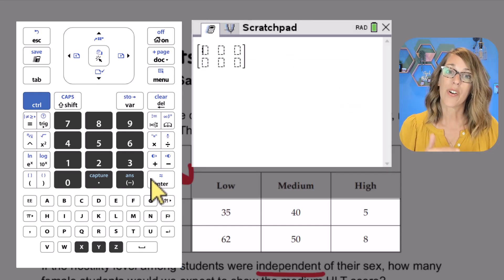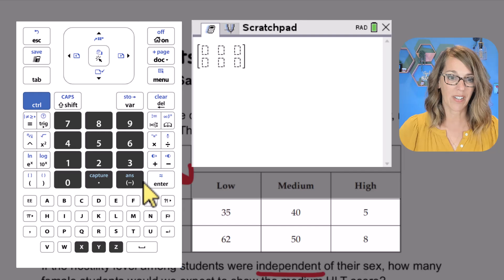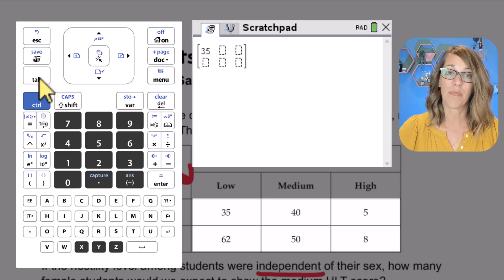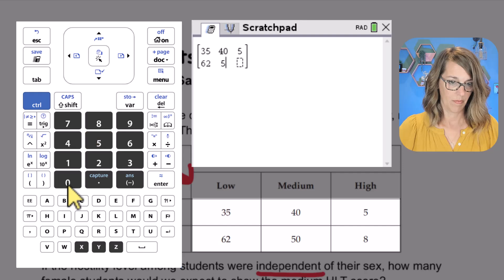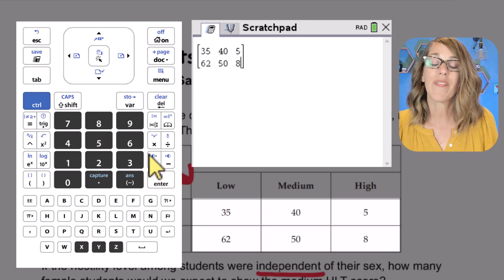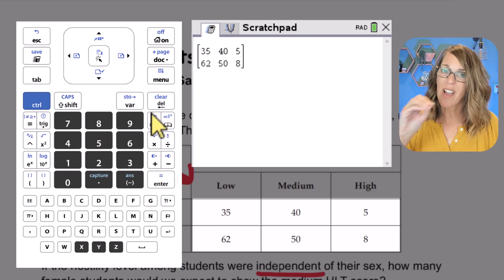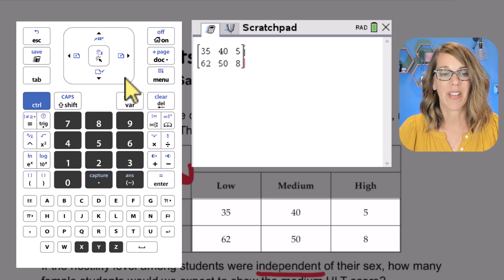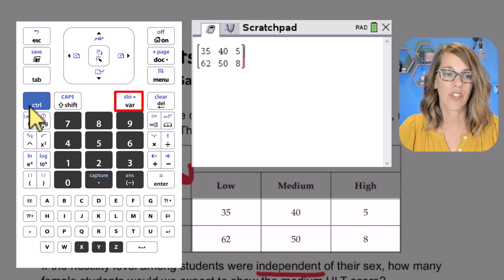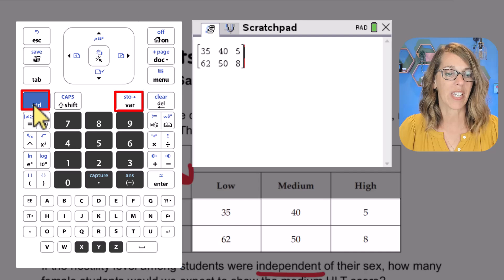I'm ready to put in our observed values. I'm just going to do each observed value followed by tab. Once I've got all my values in there, I want to get my cursor outside of the matrix so I can save this under a name. I'm going to use my store button right here, which is control of the variables key.